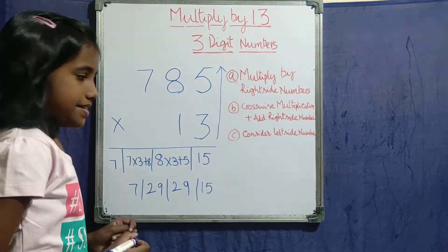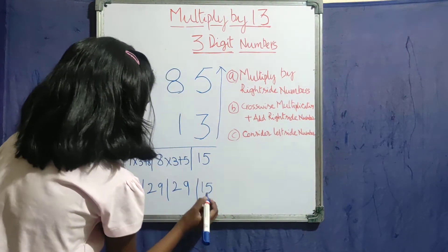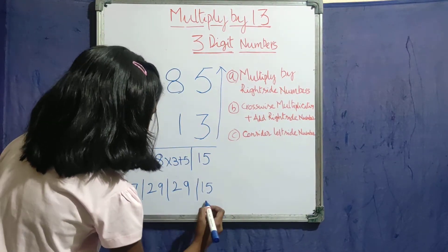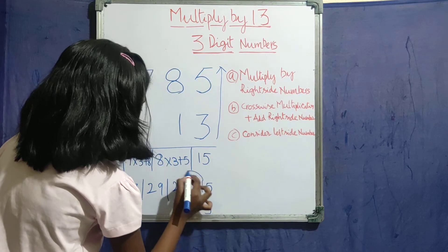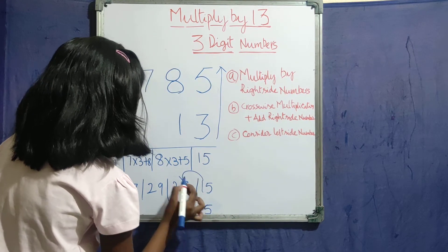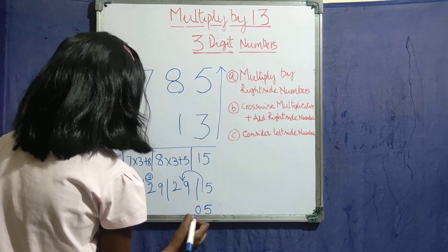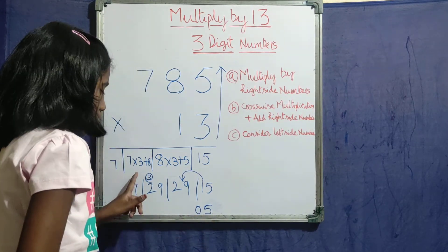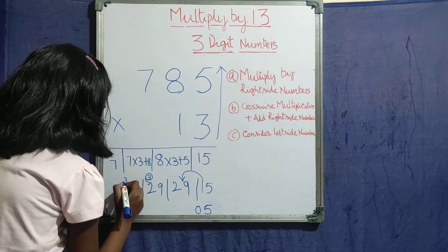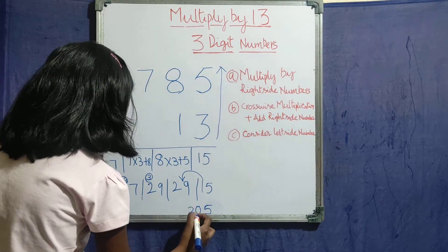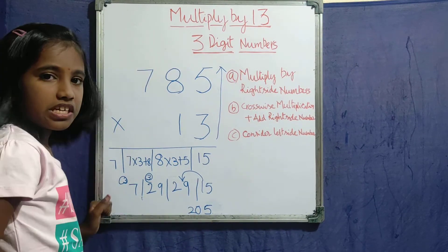Now write this 7 here, then do the balance. 5 carries over to 29, making 30. So 3 and 0. Then 29 plus 3 is 32 — write 3 and 2. Finally, 7 plus 3 is 10.